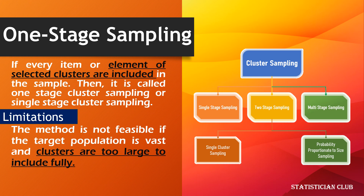When we have a population and we divide this population into clusters, and from all these clusters we select specified clusters by using simple random sampling or systematic sampling — mostly we use simple random sampling — we then study all the complete elements or items of the selected clusters. This method is one-stage cluster sampling.